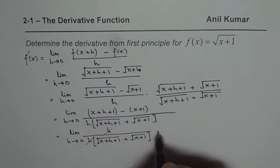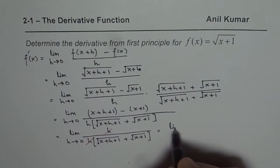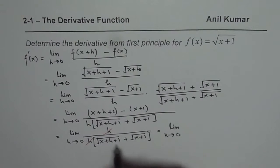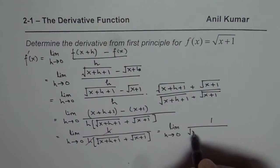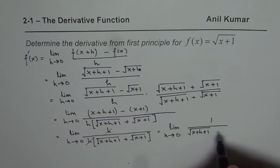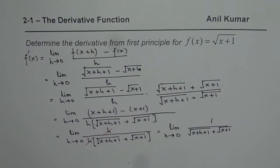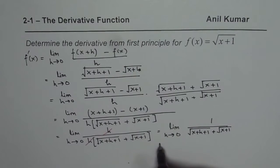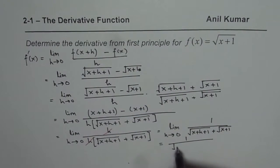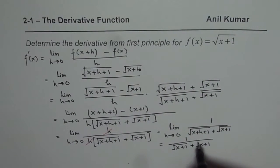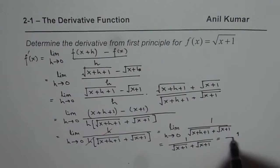So you get the limit as h approaches 0 of 1 over [square root of (x plus h plus 1) plus square root of (x plus 1)]. Now you can set h equals 0, giving 1 over [square root of (x plus 1) plus square root of (x plus 1)].